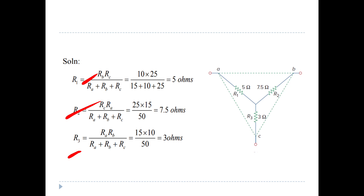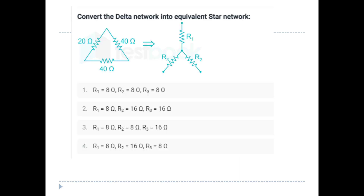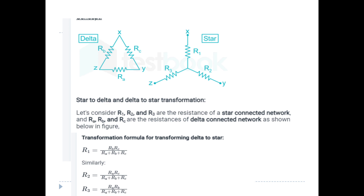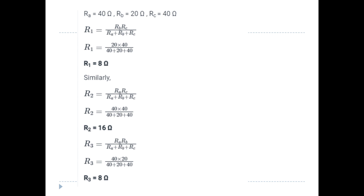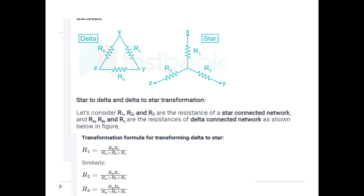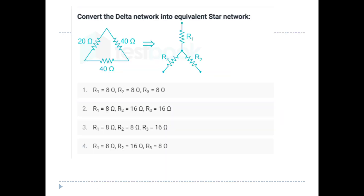We have to solve these problems for the exam. R2 and R3 are the resistance of the star network. We have to do the transformation. Adding R2 and R3 values: the answers are 8, 16, and 8, so the answer is option 4.